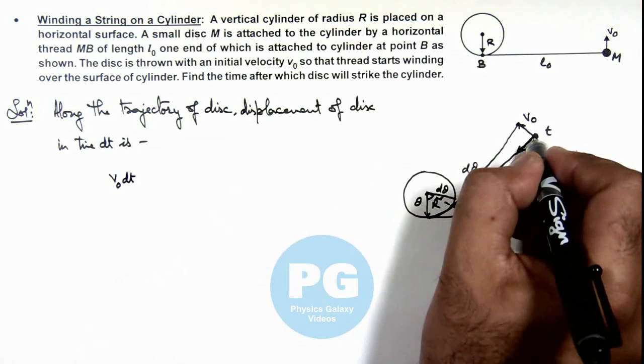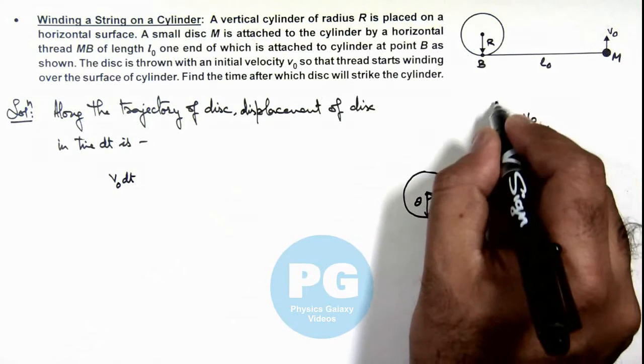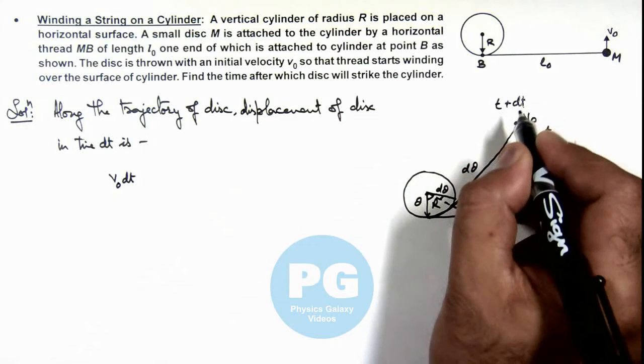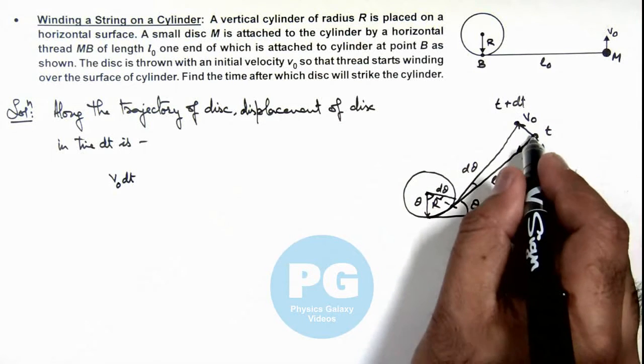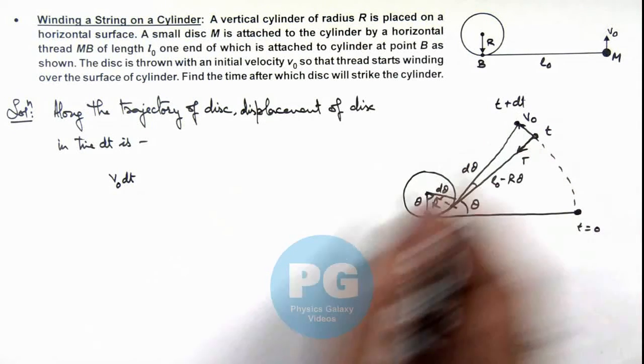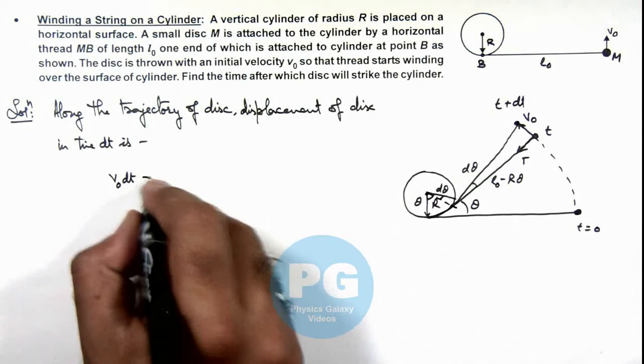If this time is t and here it is at time t + dt, then it has travelled a distance v₀dt and this distance can be written as...